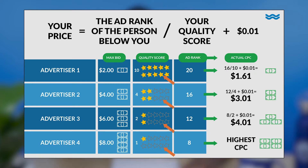Your quality score is determined by Google taking into account your click-through rate, ad relevance, and the quality of your content and landing pages. The higher your quality score, the better chance you have to rank higher on the search engine results page, even with a lower bid. Again, this is an abbreviated version, but we will link a post that will help you understand the complexities of the Google ad auction in the description box below.